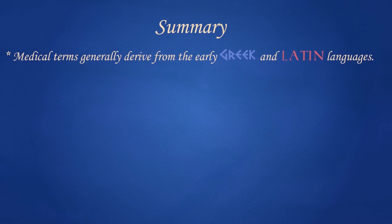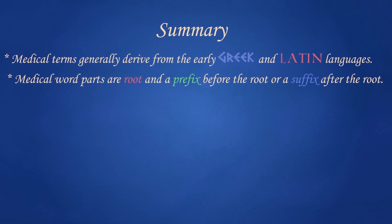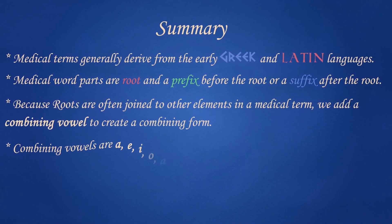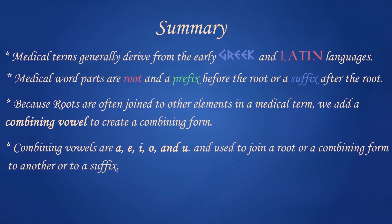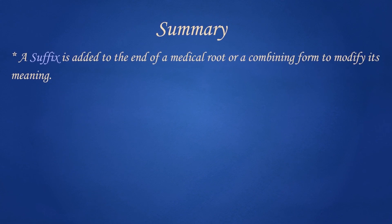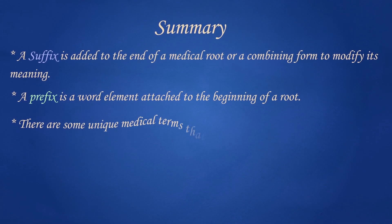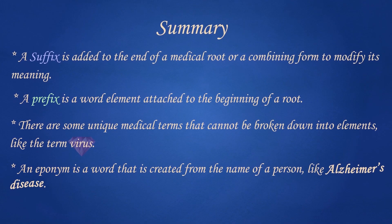To summarize: medical terms generally derive from the early Greek and Latin languages. Medical word parts are root, prefix (before the root), and suffix (after the root). Because roots are often joined to other elements in a medical term, we add a combining vowel to create a combining form. Combining vowels are a, i, o, or u, and are used to join a root or combining form to another, or to a suffix. A combining form is root plus combining vowel. A suffix is added to the end of a medical root or combining form to modify its meaning. A prefix is a word element attached to the beginning of a root. Some unique medical terms cannot be broken down into elements, like 'virus'. An eponym is a word created from the name of a person, like Alzheimer's disease.